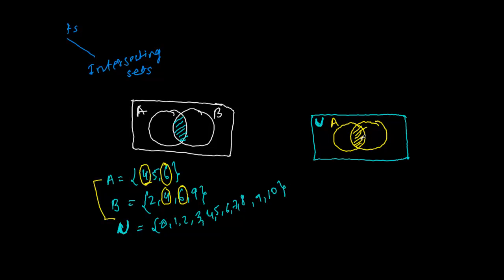Here we will write the common elements found in both A and B. When putting elements into the Venn diagram after drawing the structure, always start from the intersecting region — that is a key rule that makes it easier. So first, what is common? Four and six. We fill the intersection first with 4 and 6. Once the common part is done, write the remaining elements of each subset. In subset A, we had 4, 5, 6 — 4 and 6 are already in the intersection, so only 5 is left; I put 5 in the A-only region. In subset B, 4 and 6 are already included, so 2 and 9 are left; I put 2 and 9 in the B-only region.